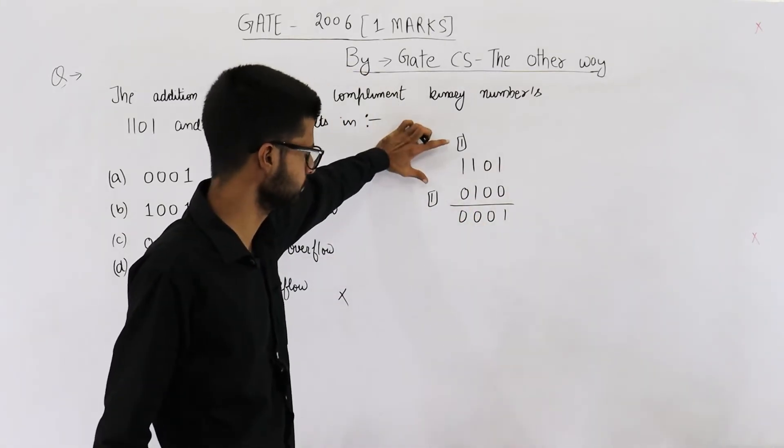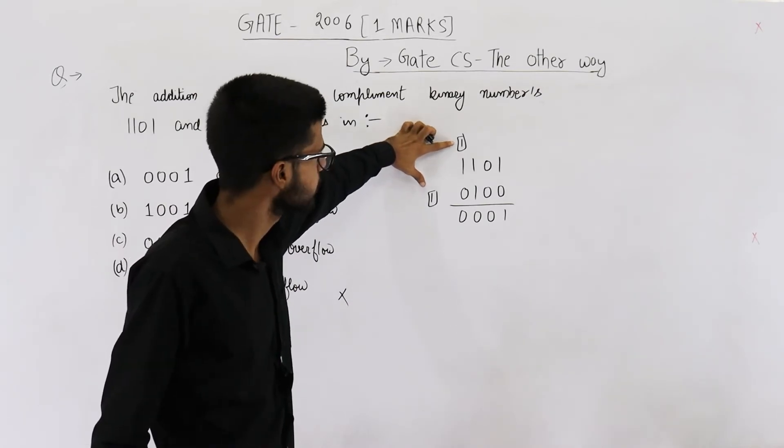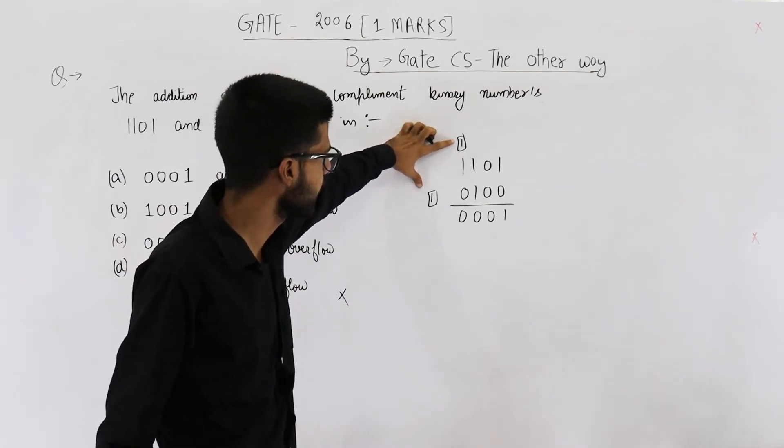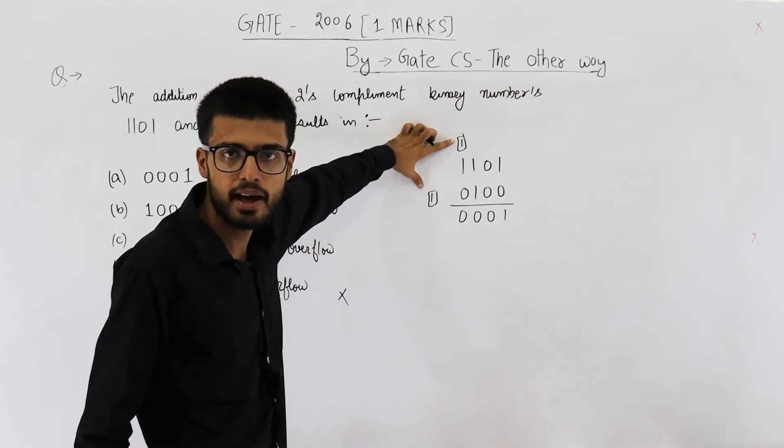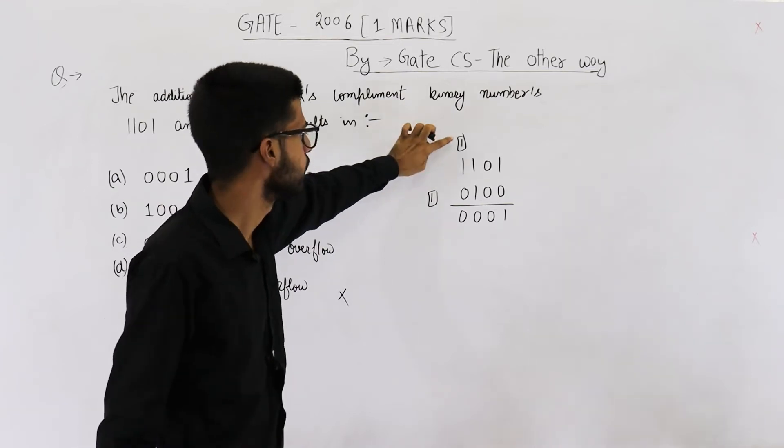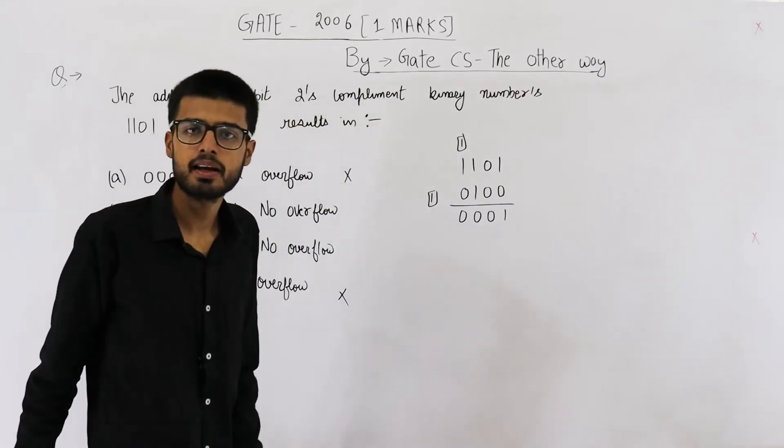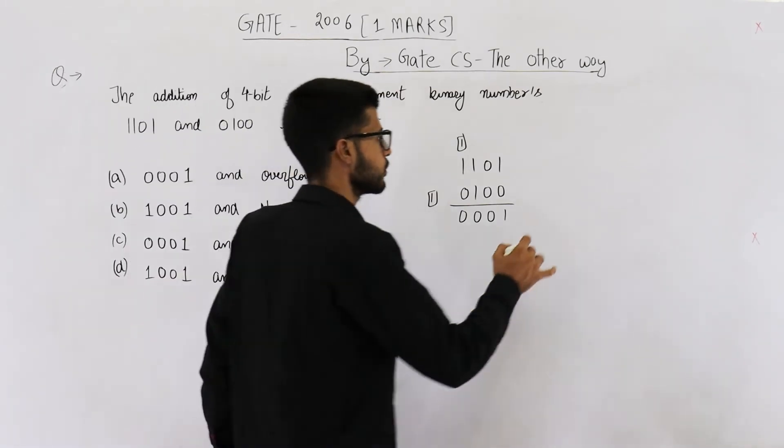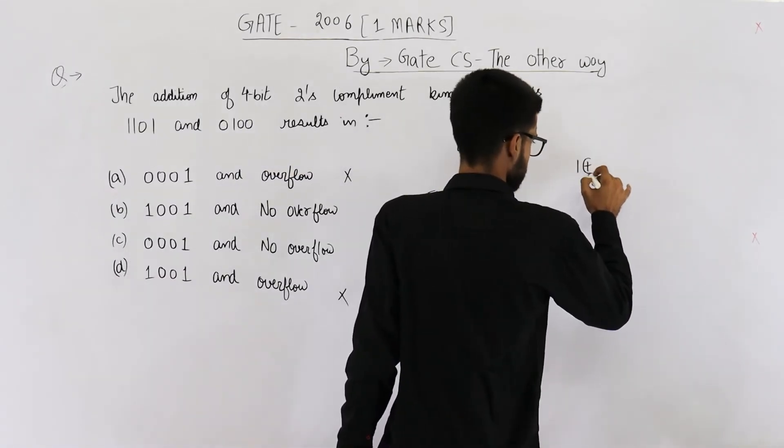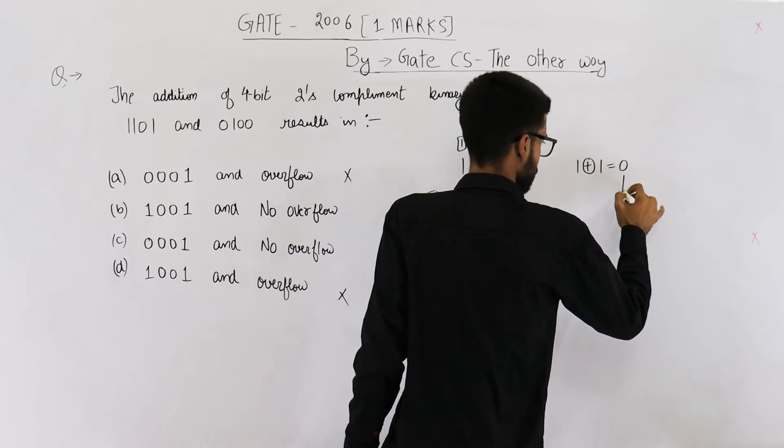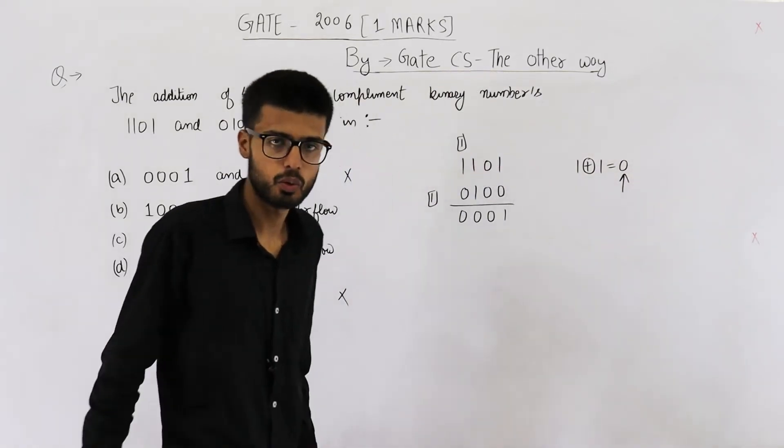From here also you can see most significant bit has a carry in equal to 1 and carry out equal to 1. XOR of carry in and carry out will be 0. 1 XOR 1 equal to 0. And 0 means there will be no overflow.